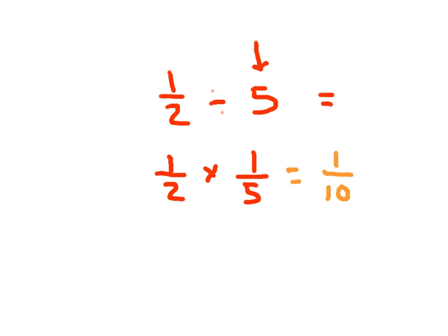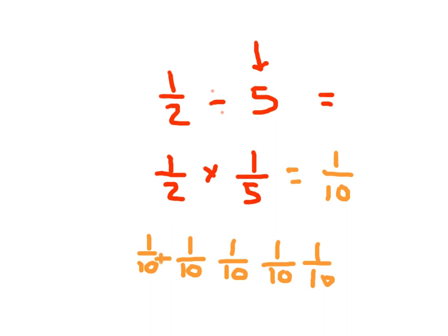So 1 half divided into 5 parts is 1 tenth. And it makes sense that if we put together 5 of those 1 tenths — 1 plus 1 plus 1 plus 1 plus 1 equals 5, and the denominator stays the same — we get 5 tenths, which does equal 1 half.